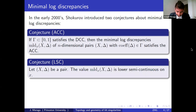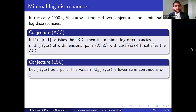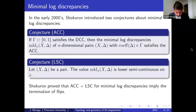The second conjecture says that this invariant is lower semi-continuous on X. Both conjectures seem very natural. The development of the Minimal Model Program in the last 20 years was really motivated by these two conjectures. Crucially, one can prove that these two conjectures together imply the termination of flips, which is one of the main conjectures of the MMP.